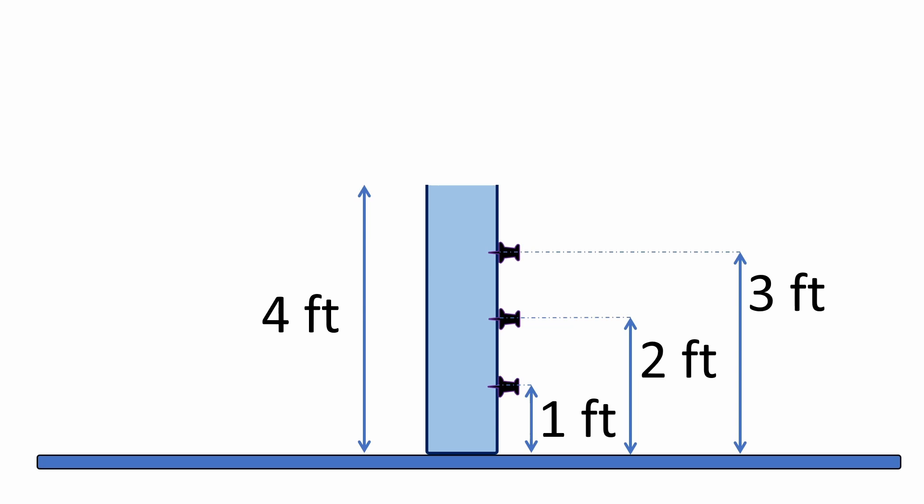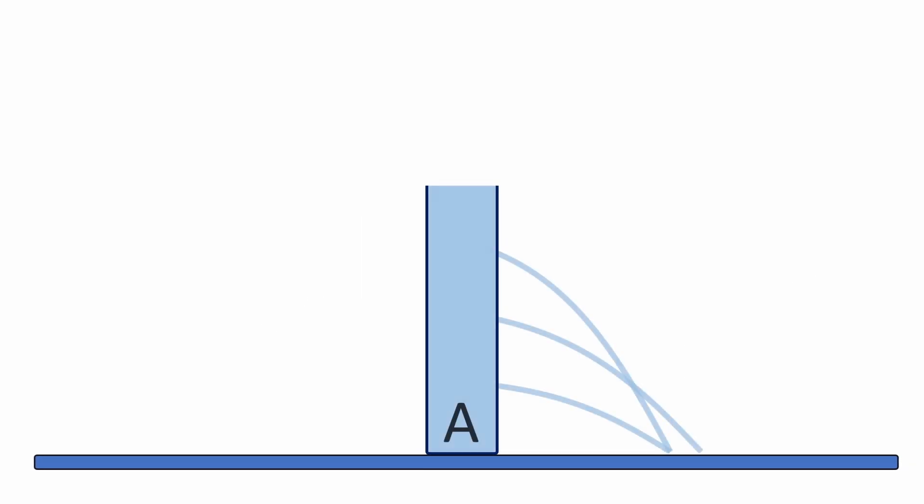I'll give you three options to choose from, only one of which is correct. Option A looks like this, where the jets from the bottom and top holes land at the same spot, and the jet from the middle hole lands a little bit farther away.